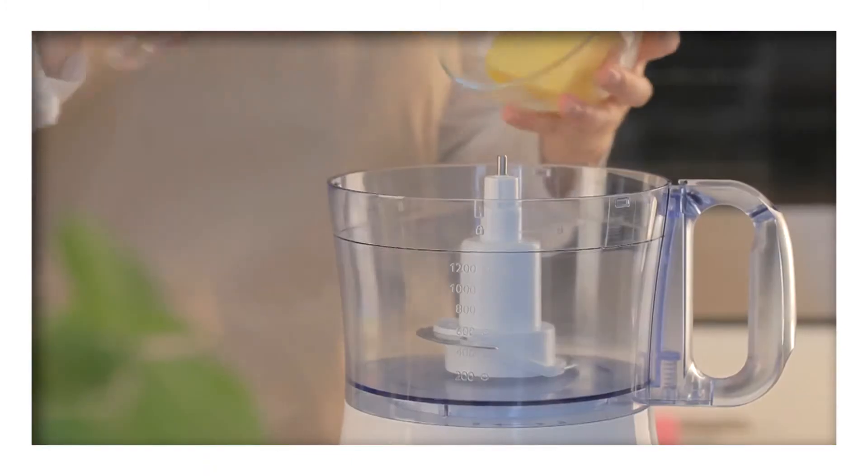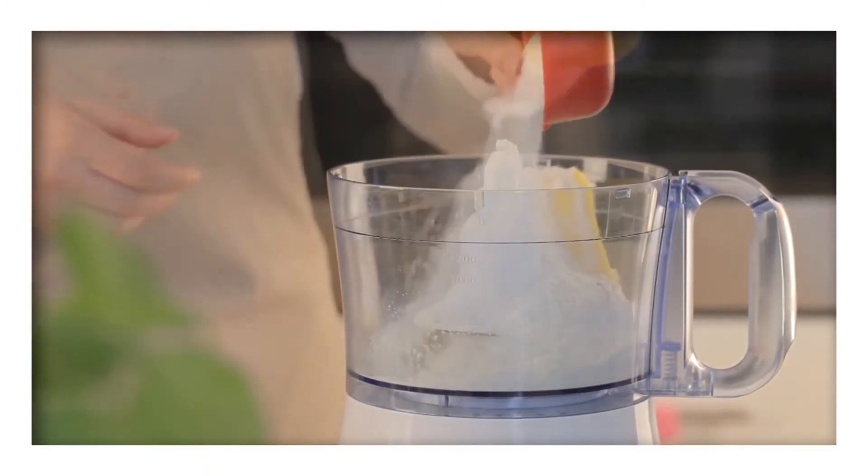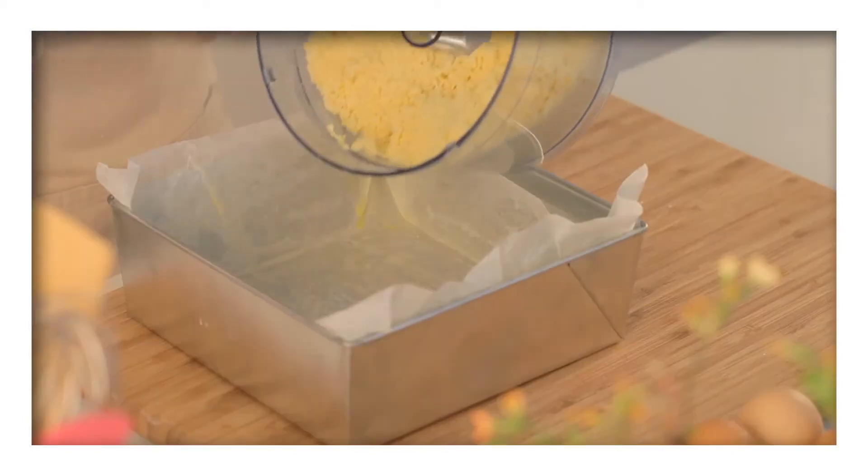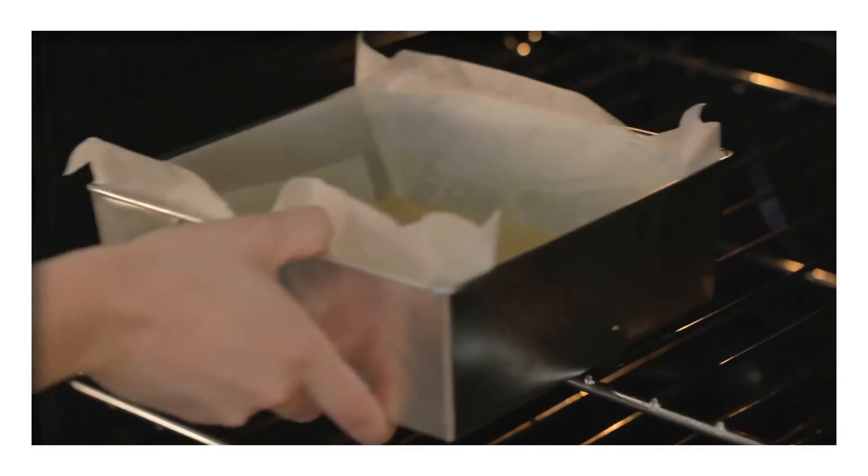Now make the base. In a food processor, place the butter, flour and icing sugar and process until the mixture resembles fine breadcrumbs. Press the mixture into the prepared pan before popping it into the oven for 15 minutes.